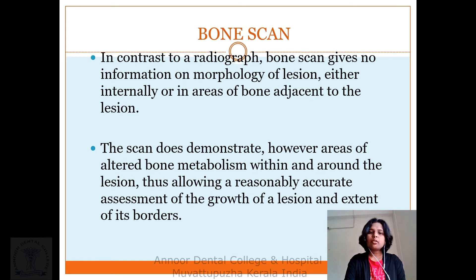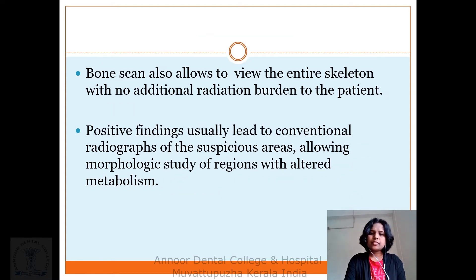Bone scan: in contrast to a radiograph, a bone scan gives no information on the morphology of the lesion, either internally or in the areas of bone adjacent to the lesion. The scan does demonstrate, however, areas of altered bone metabolism within and around the lesion, thus allowing a reasonably accurate assessment of the growth of the lesion and the extent of its involvement. Bone scan also allows viewing of the entire skeleton with no additional radiation burden to the patient. Positive findings usually lead to conventional radiographs of the suspicious areas, allowing morphology study of regions with altered metabolism.